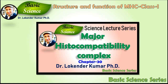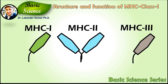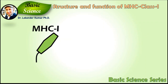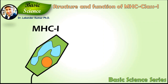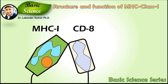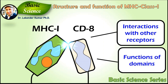In the previous episode, we discussed about the major histocompatibility complex in general. We also identified that there are three classes of major histocompatibility complex: class 1, class 2, and class 3. In this presentation, we will focus on the structure and function of MHC class 1 molecule in detail. We will also focus on the interaction of CD8 co-receptor and the function of various domains of MHC class 1 molecule.